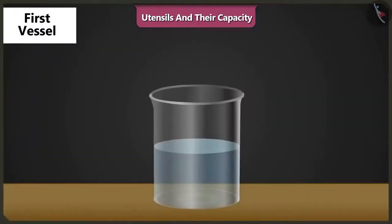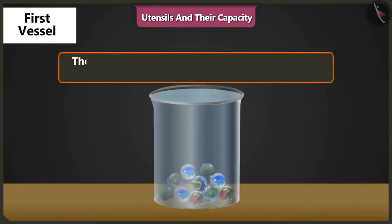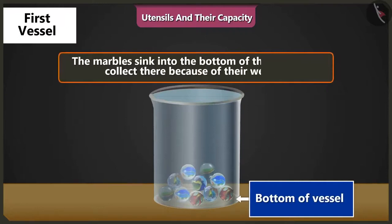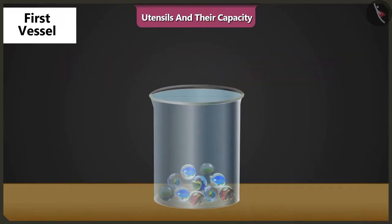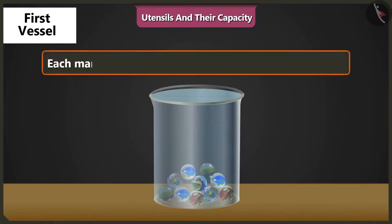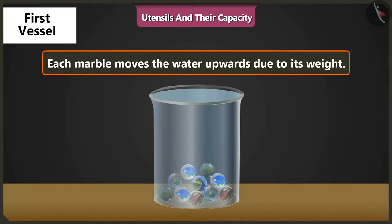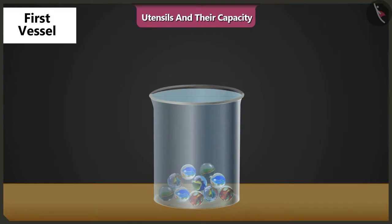Mishtu, when we drop the marbles in a vessel half filled with water, the marbles sink to the bottom of the vessel and get collected there due to their weight. And as a result, the water comes up. Yes, I understood. When marbles are dropped in the water, each marble moves the water upwards due to its weight. That brings the water upwards and the water level rises.